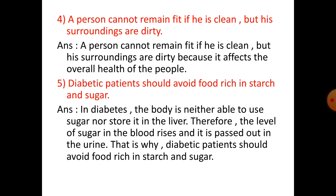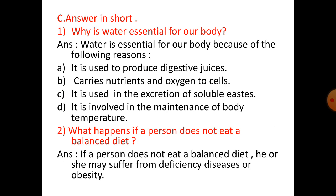Number five — diabetic patients should avoid food rich in starch and sugar. In diabetes, the body is neither able to use sugar nor store it in the liver. Therefore, the level of sugar in the blood rises and it is passed out in the urine. That is why diabetic patients should avoid food rich in starch and sugar.